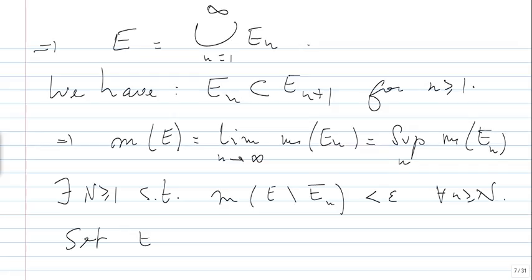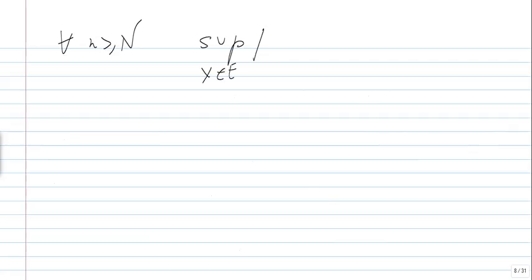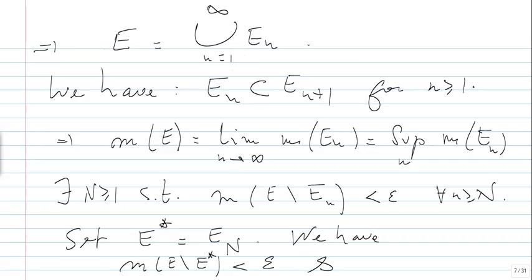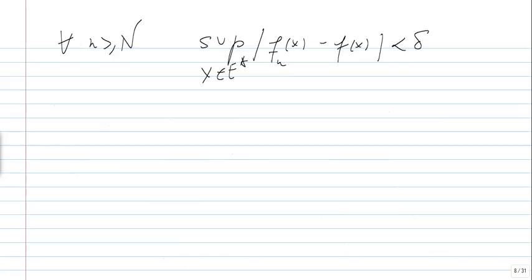Set E* to be the E_N. Then we have: first, the measure of E minus E* is less than epsilon; and for every k greater than N, we have the supremum over x in E* of |F_k(x) - F(x)| less than delta. Checking the definition of E_N confirms there is no sup in the definition — so for every x in E* and k greater than N, we have |F_k(x) - F(x)| less than delta.